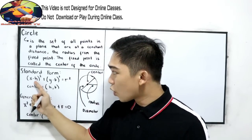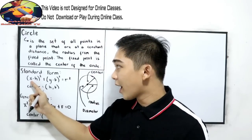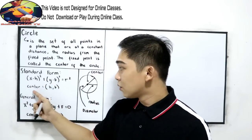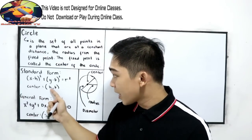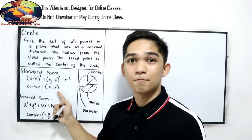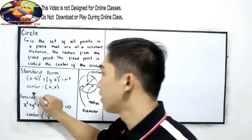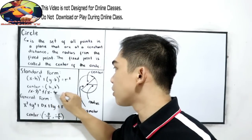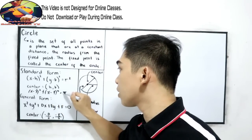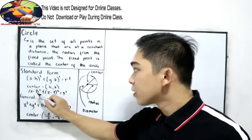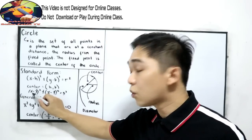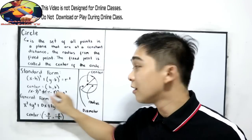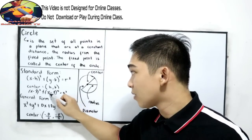To find the center, we use the h and k values. For example, if we have (x minus 3) squared plus (y minus 4) squared equals 3 squared, we equate x minus 3 to 0, so h equals positive 3, and x minus 4 equals 0, so k equals positive 4.